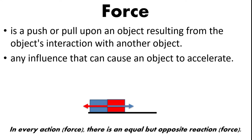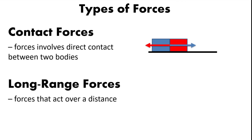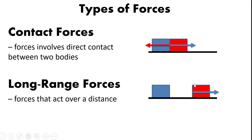Let's identify the forces that can be present in our problems. There are two types of forces: contact forces, which involve direct contact between two objects, and long-range forces, which act over a distance. Even though objects are separated by a certain distance, long-range forces can still act between them. For example, the blue box and the red box are not touching, yet they can still exert forces on each other.